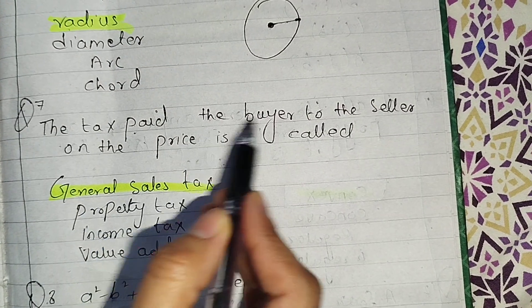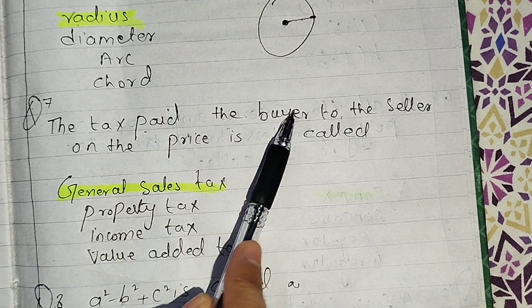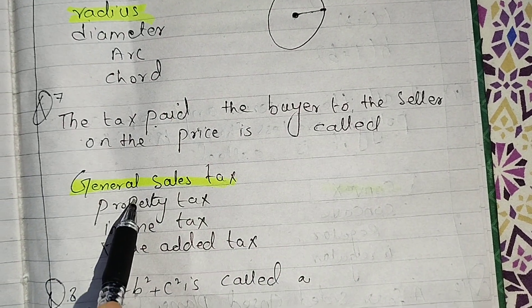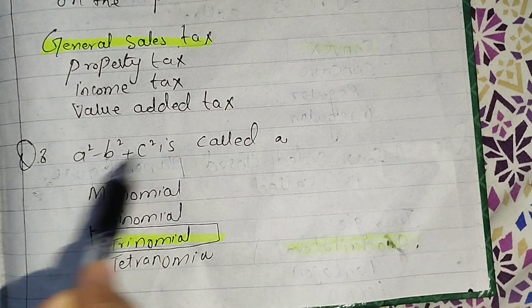The tax paid by the buyer to the seller is called General Sales Tax, GST.